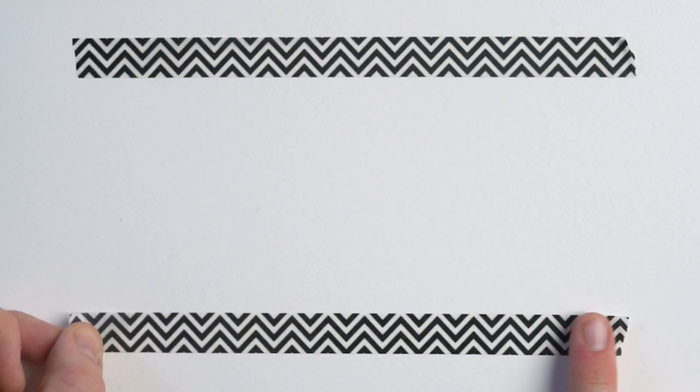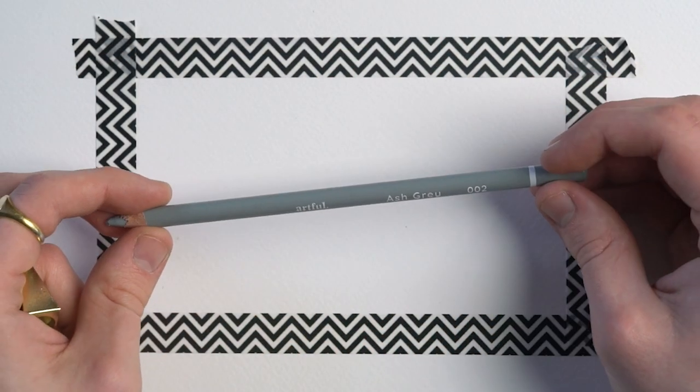Firstly, I'm making a border for my artwork using some washi tape, before sketching in my initial shapes with our ash grey pencil.